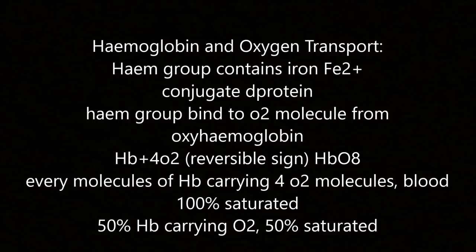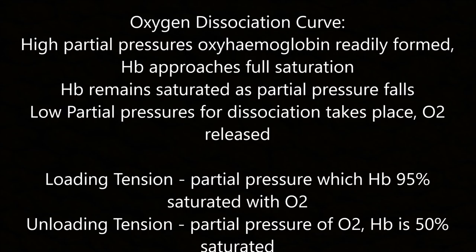Transport of oxygen: haemoglobin contains a haem group with iron (Fe2+) and is a conjugated protein. The haem group binds to O2 forming oxyhaemoglobin: haemoglobin + oxygen ⇌ oxyhaemoglobin. Each haemoglobin molecule carries 4 O2 molecules when 100% saturated. If 50% of haemoglobin carries O2 it is 50% saturated. On the oxygen dissociation curve, at high partial pressures oxyhaemoglobin is readily formed and haemoglobin approaches full saturation.